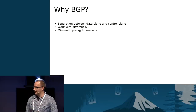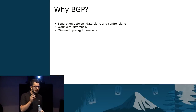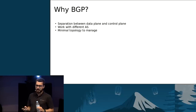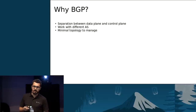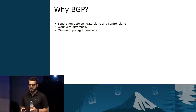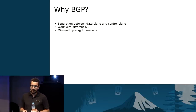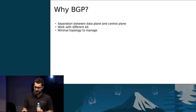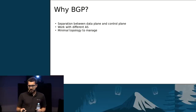So why BGP? First, there is a clear separation between the data plane and the control plane. We didn't want to overload the data plane of Neutron. We need to advertise routes to different autonomous systems, and OSPF and IS-IS don't handle these use cases. Also, we don't need to expose a big complex routing network — we just need to say what the IP addresses or network IP addresses of the tenant routers are. We don't need much more than that.